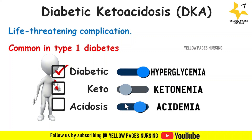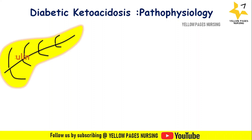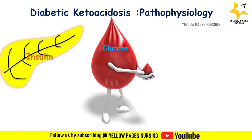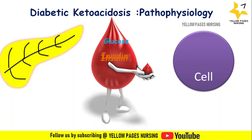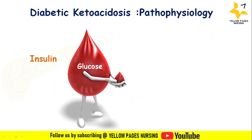Before discussing the pathophysiology of diabetic ketoacidosis, you should first know about the function of insulin so that you will have a clear idea. The pancreas makes insulin and releases it into the bloodstream. Insulin helps to move glucose into the cells, which are then used for energy. The body stores any extra glucose in the liver, muscles, and fat cells. The major function of insulin includes increased glucose uptake by the liver, skeletal muscles, and adipose tissue.